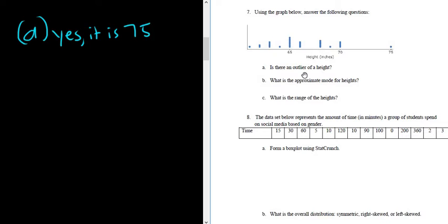Part B: what is the approximate mode for the heights? This is the height that appears the most. You can tell by looking at the number of dots that the height that appears the most is 65. So the mode in this case would be 65.